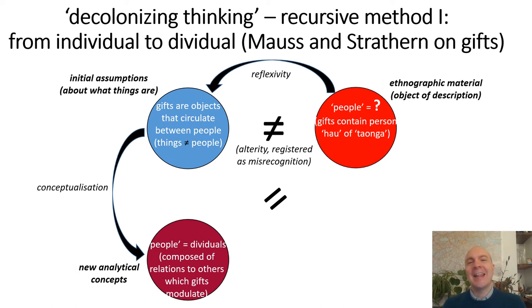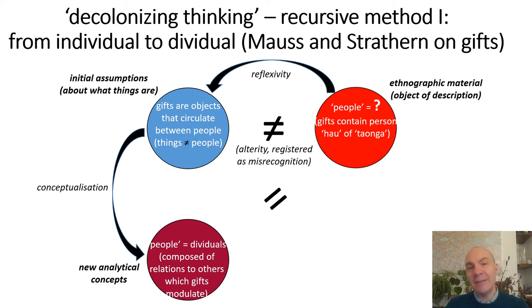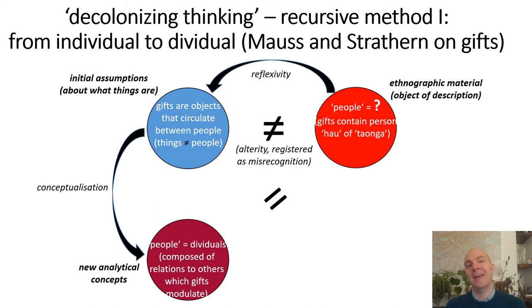Tamati Ranapiri says that the reason Maori return gifts is that they understand a gift contains the 'hau' — translated by Mauss as the spirit or spiritual essence of the person who gives it, the spirit of the donor. Because the gift contains the spirit of the person who gave it, the person who receives it effectively receives a part of the person who gave the gift to them, and is therefore bound in a relationship of reciprocity with that person.